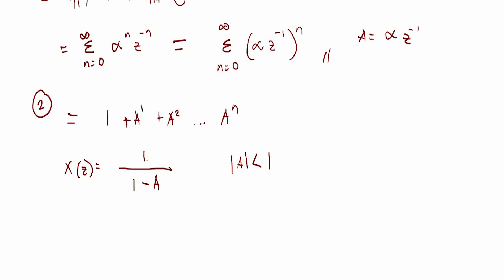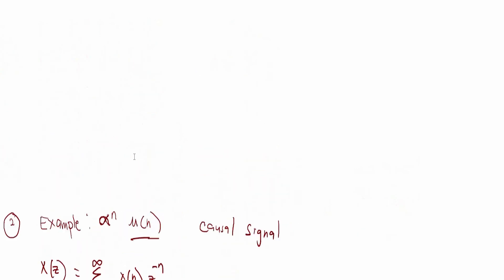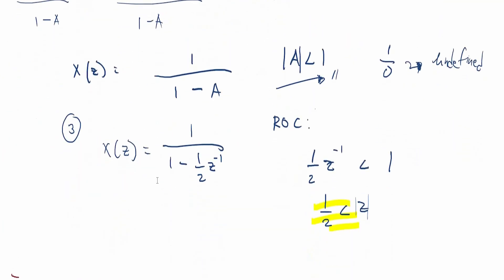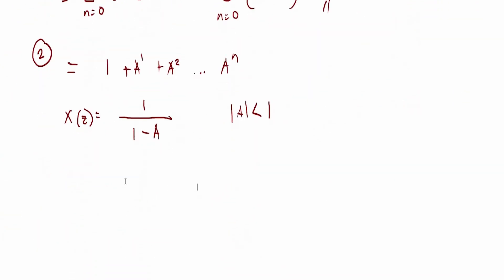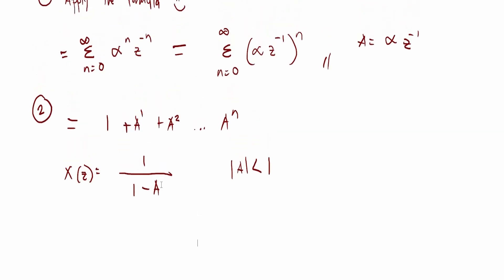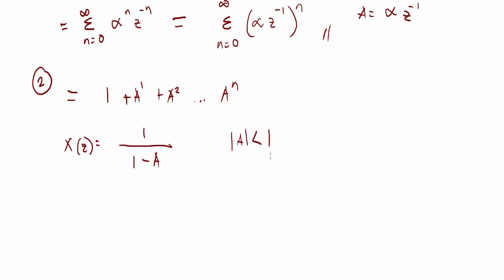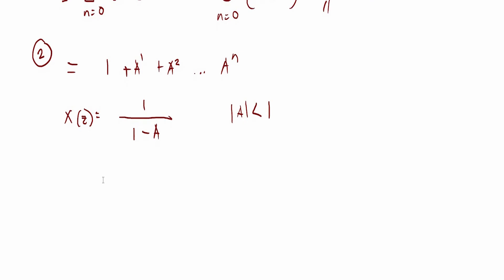Since this is an infinite geometric sequence, I've already explained how we got here in example number one. If you already know how we got here, it's pretty easy to do. This is also the criteria with regards to the region of convergence.